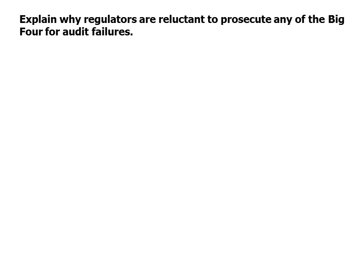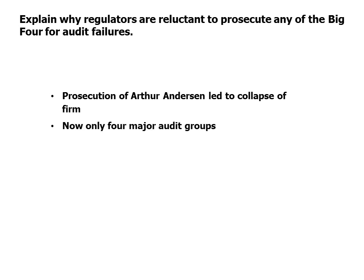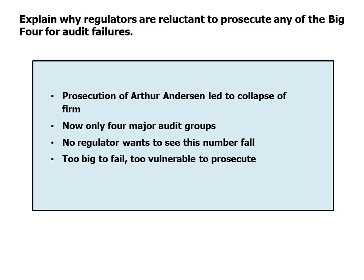Explain why regulators are reluctant to prosecute any Big Four firm for audit failures. The prosecution of Arthur Andersen led to the collapse of that firm. There are now only four major audit groups, and no regulator wants to see this number reduced further — making them effectively too big to fail or too vulnerable to prosecute. As a result, most cases taken by bodies like the SEC against major audit firms are settled out of court, with penalties that simply lead to higher fees being charged to audit clients.